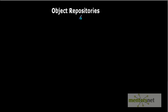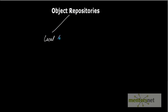Hello everyone. In this video we'll discuss object repositories in QTP. An object repository is the storage location where all the objects, along with their properties and descriptions, get stored. There are two types of object repository: the first one is local, and the other one is shared.